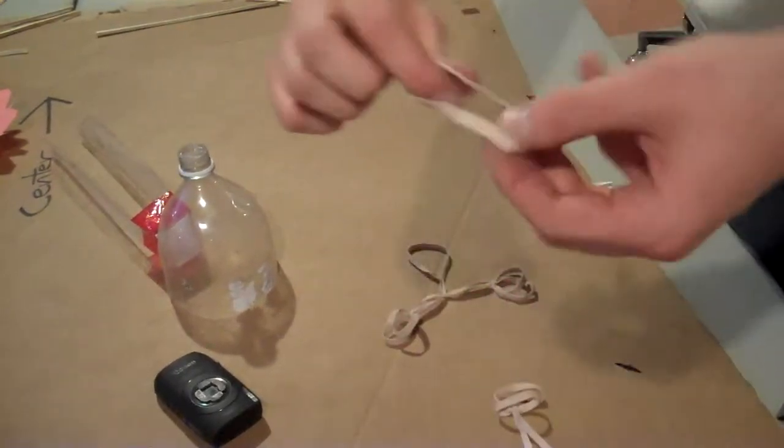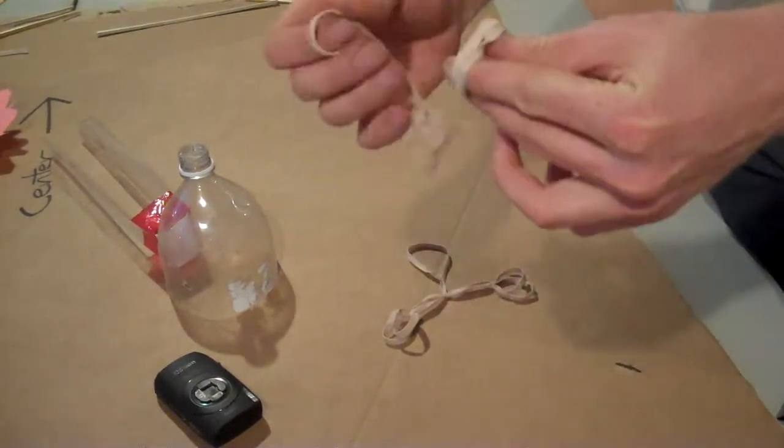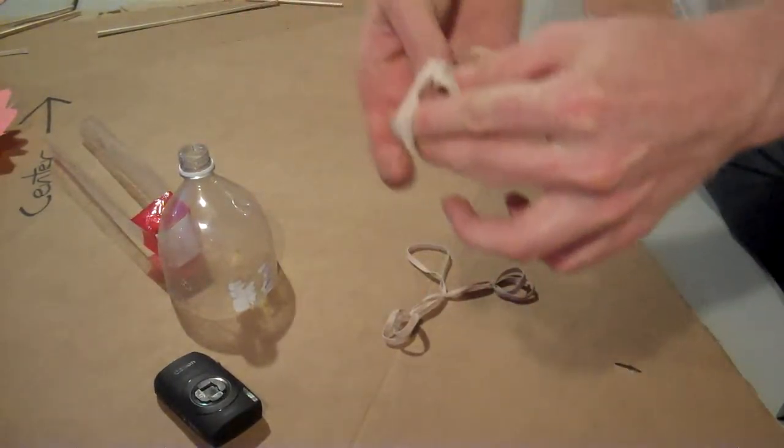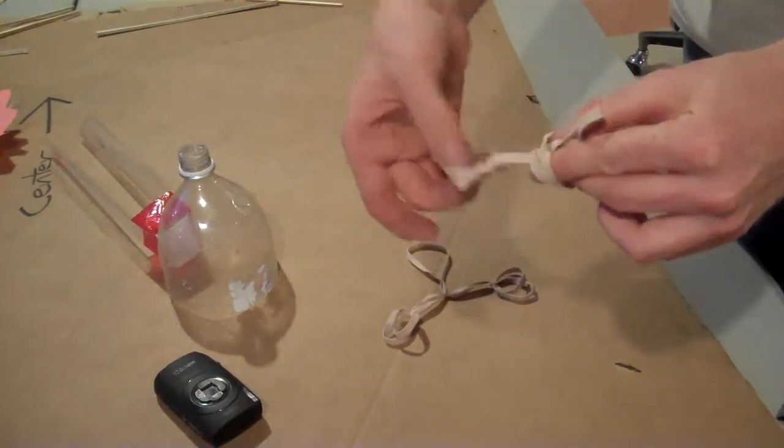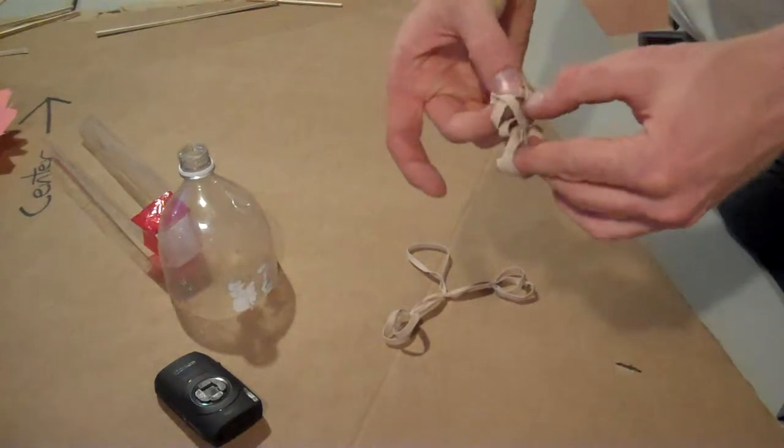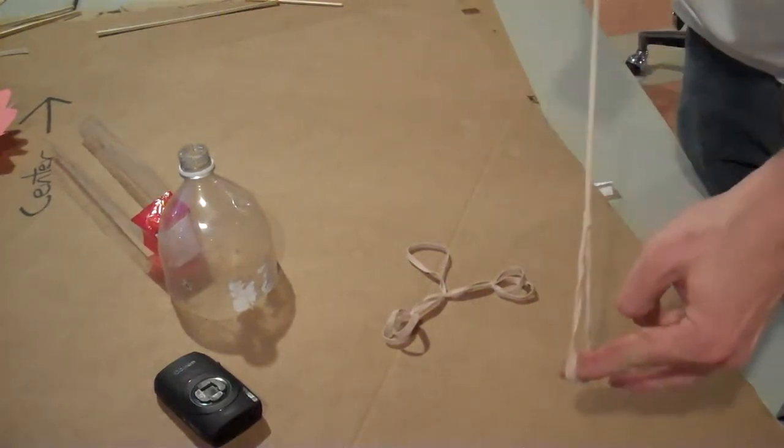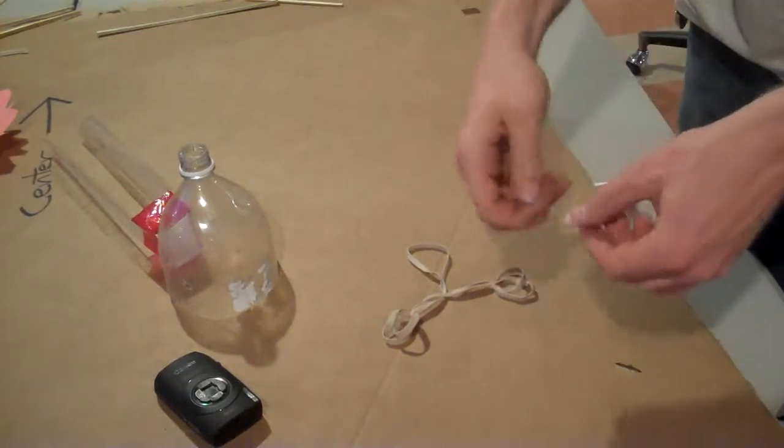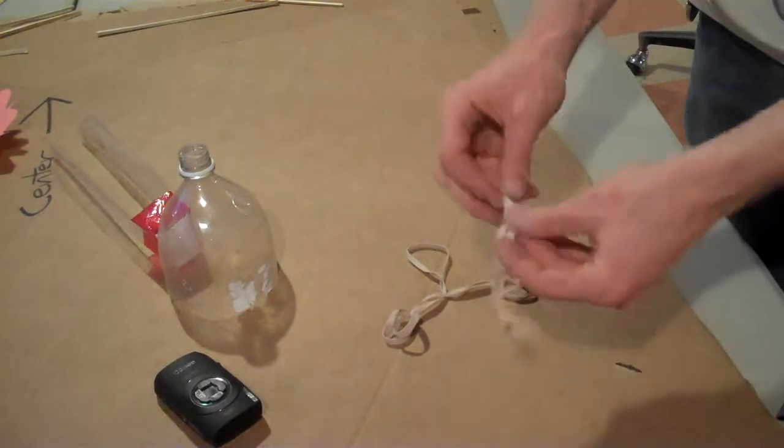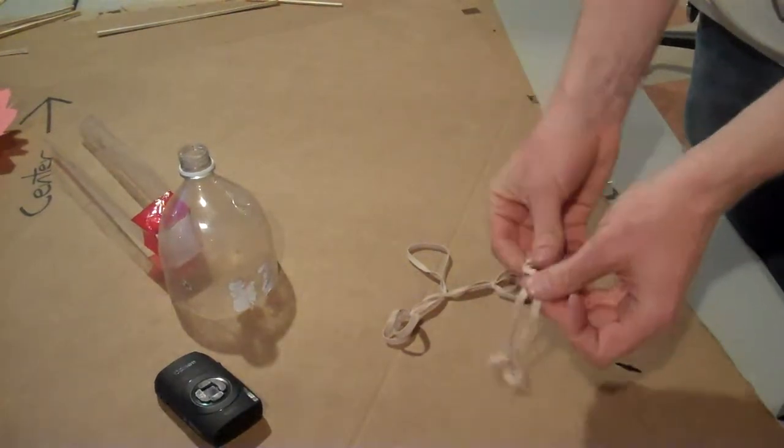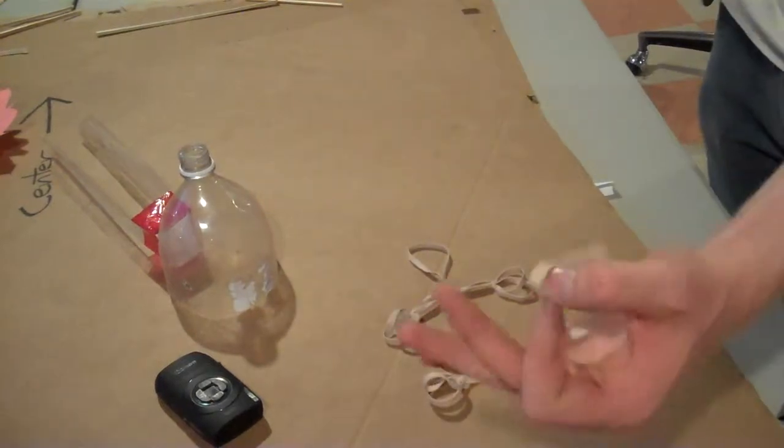So I take another, double it, stick this end through, and then I take the doubled up rubber band and I pull it through this knot and pull it tight. And it's kind of twisted up. Once I get it untwisted, it'll look just like the other one, except for missing its central knot.